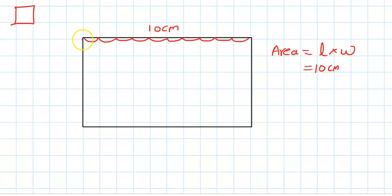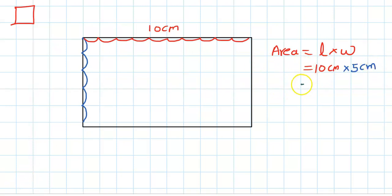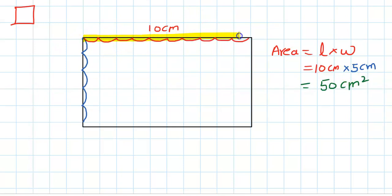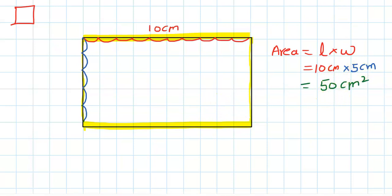Now let's find the width: 1, 2, 3, 4, and 5. Width is 5 centimeters. If you multiply 10 times 5 you get 50, so it is 50 centimeter square. This rectangle — outlined by the yellow lines — has an area of 50 centimeter square.